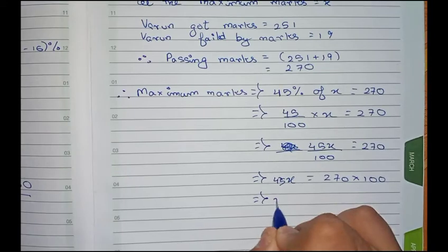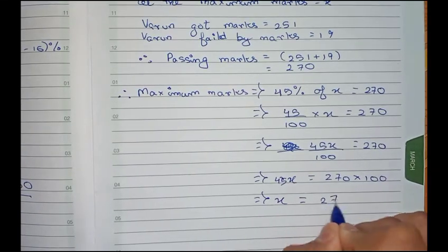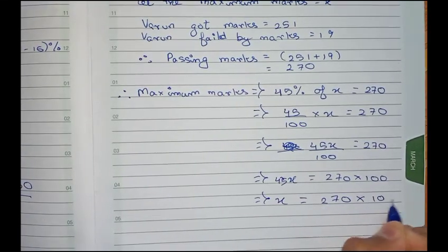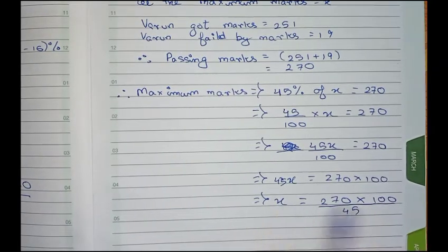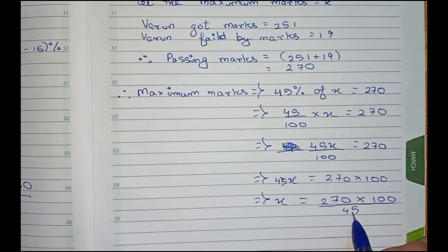So now we write x equals to 270 into 100 by 45. Now as we are taking 45 from left side to right side, so it goes for division.